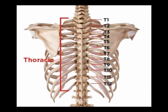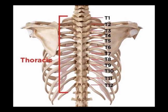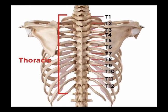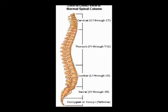There are 12 vertebrae in the thoracic spine, 12 intervertebral discs in the thoracic spine, and 12 pairs of spinal nerves in the thoracic spine. The spinal nerves exit below the corresponding numbered spinal vertebrae. So spinal nerve T1 exits below the T1 vertebrae.